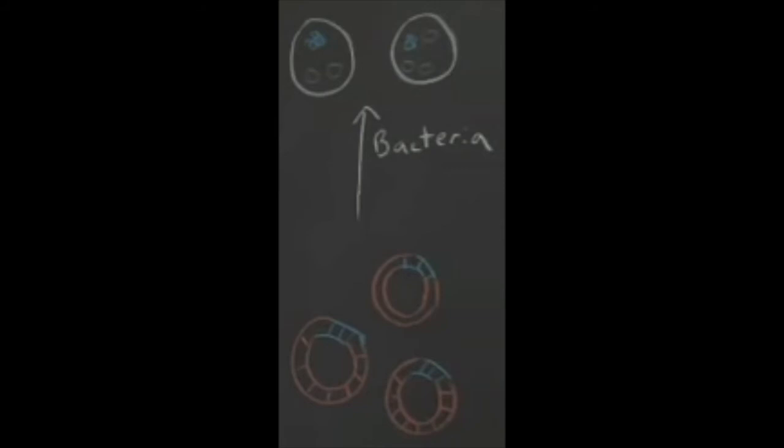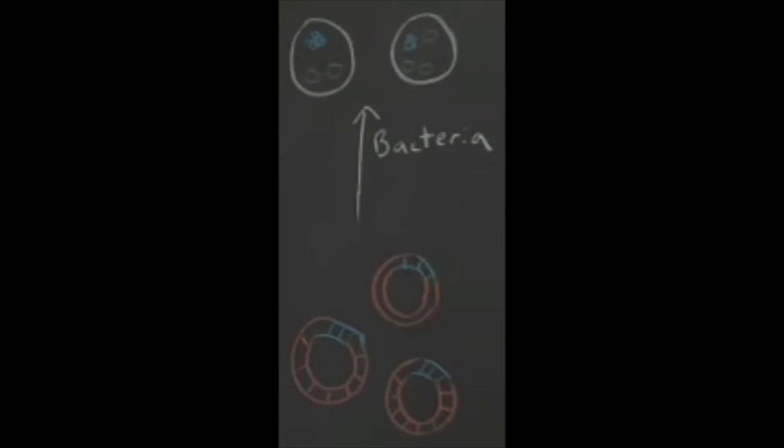You must select the bacteria that have taken up the vector — that is, the positive bacteria. By growing large quantities of this bacteria, you will get the protein of interest in large quantities.